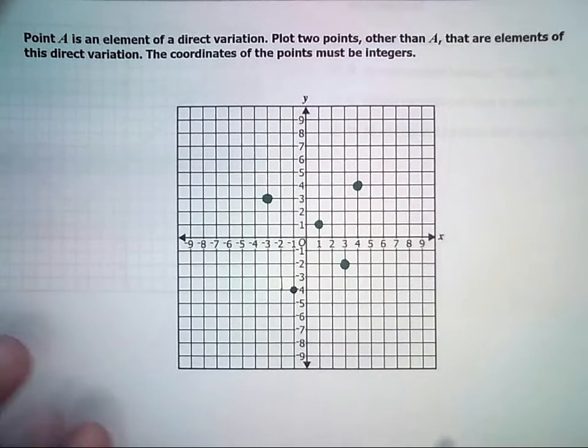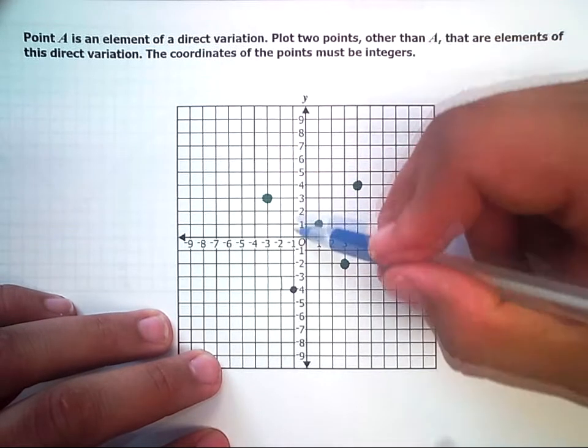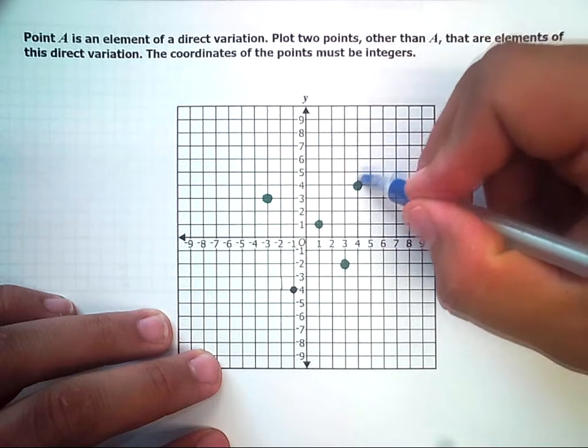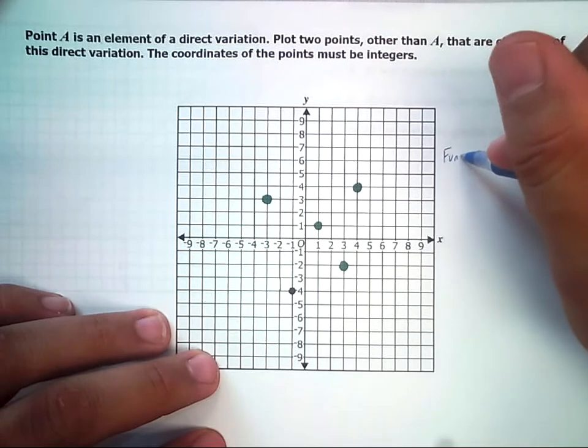And again, it's the same rule. It should only be one point on any given x value. So if I look here, all my vertical lines work. So this is indeed a function.